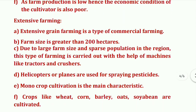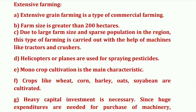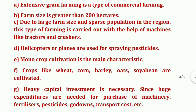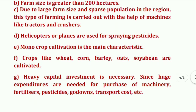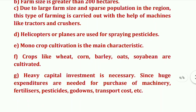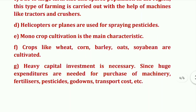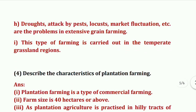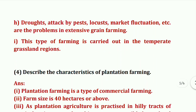Extensive grain farming is a type of commercial farming. Farm size is greater than 200 hectares. Due to large farm size and sparse population, this farming is carried out with the help of machines like tractors and combines. Helicopters or planes are used for spraying pesticides. Monocrop cultivation is the main characteristic, and crops like wheat, corn, barley, oats, and soybean are cultivated. Heavy capital investment is necessary since huge expenditures are needed for machinery, fertilizers, pesticides, go-downs, and transport. Droughts, pest attacks, and market fluctuations are the problems in extensive grain farming. This type of farming is carried out in temperate grassland regions.